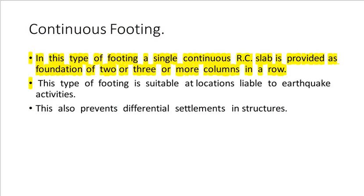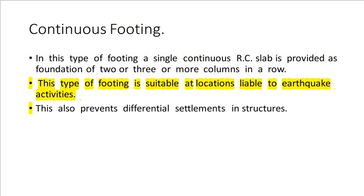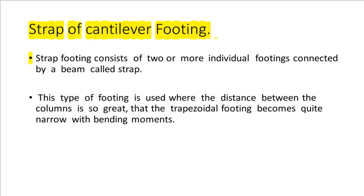In continuous footing, a single continuous RC slab is provided as the foundation of two, three, or more columns in a row. This type of footing is suitable at locations liable to earthquake activities and also prevents differential settlements in structures.